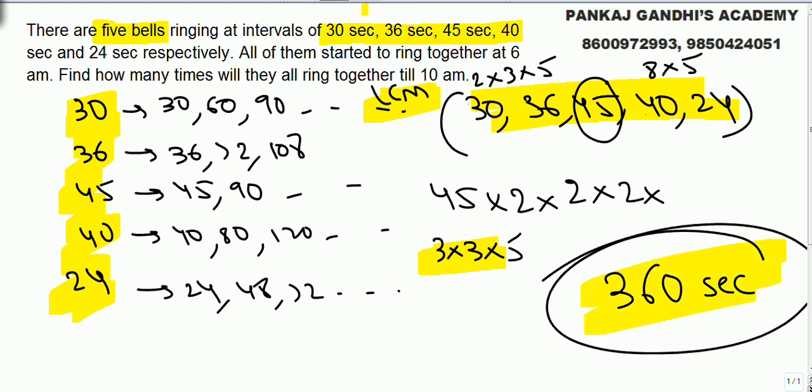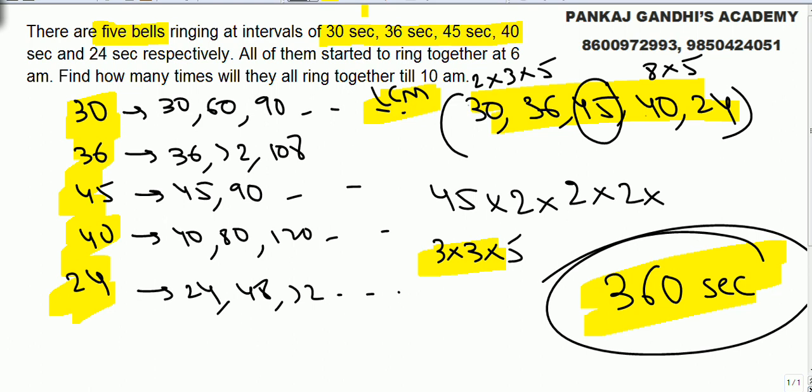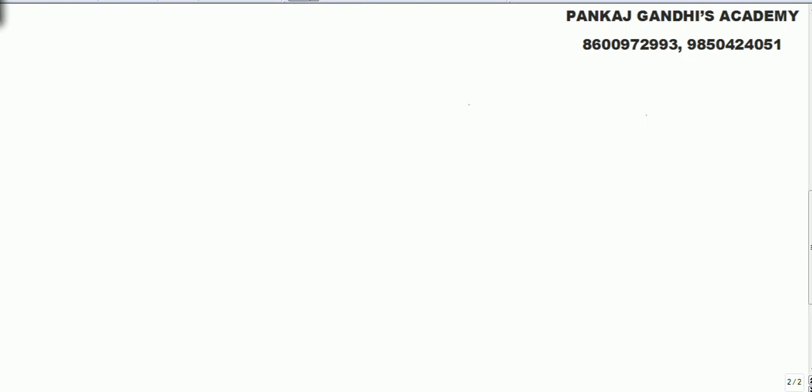All the bells will ring together after every 360 seconds. So for all the bells to ring together, the time should be multiple of 360. Every 360 seconds - 360 seconds means after every six minutes they will ring.